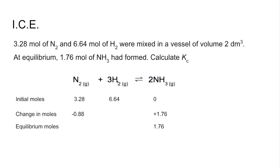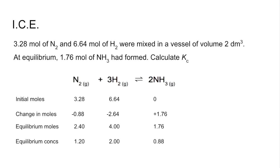For hydrogen, there's a 3 to 2 ratio with ammonia, so to produce 1.76 moles of ammonia you need 1.5 × 1.76 = 2.64 moles of hydrogen to react — so hydrogen drops by 2.64. The equilibrium moles are therefore 2.40 for nitrogen and 4.00 for hydrogen. Dividing by the vessel volume of 2 dm³ gives the equilibrium concentrations, which are substituted into the Kc expression to give a value of 0.0807 dm⁶ mol⁻².